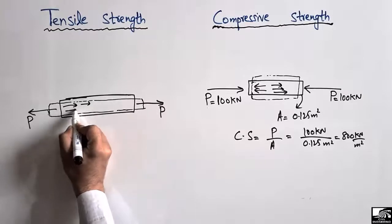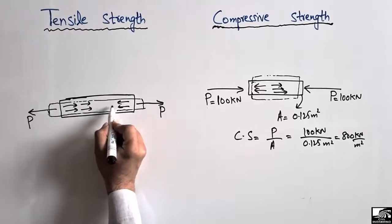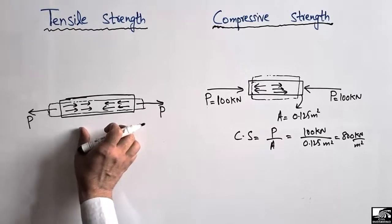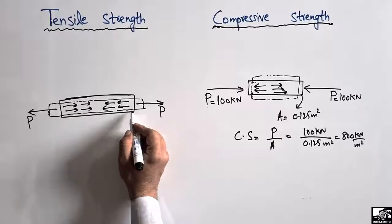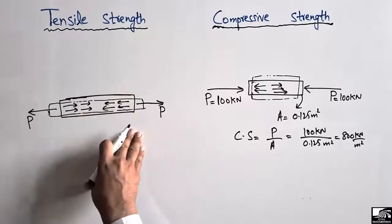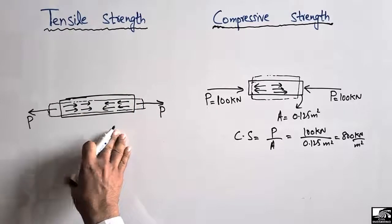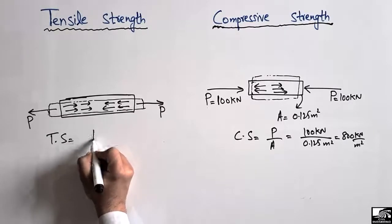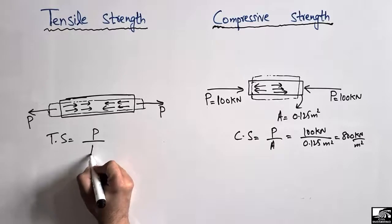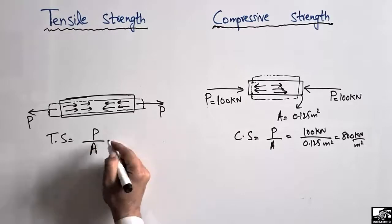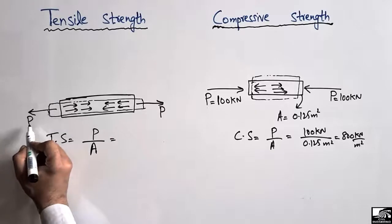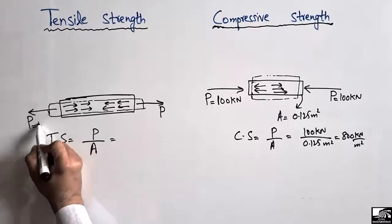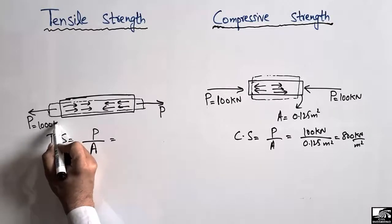The resistance acts in the opposite direction to the applied tensile load. The internal resistance created inside the material divided by the cross-sectional area of the object is called the tensile strength of the material. The tensile strength equals the tensile load divided by the area. Let's suppose the maximum tensile load this material can take is 1000 kN.